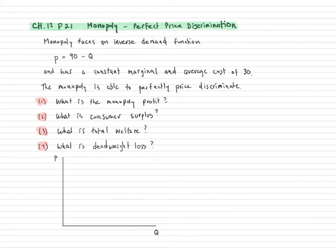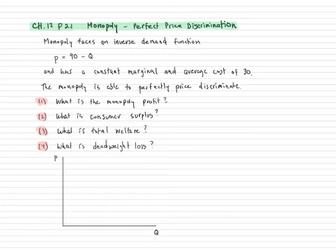In this video I want to talk about problem 2.1 from chapter 12. This is a monopoly question where the monopoly is able to perfectly price discriminate. We have a monopoly that faces an inverse demand function given by P equals 90 minus Q. Since it's a monopoly, the inverse demand function is the market demand — everyone who wants to buy this good has to buy it from this one firm. We also know this monopoly has constant marginal and average cost equal to 30.